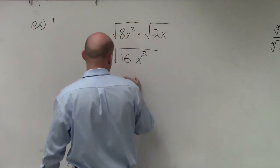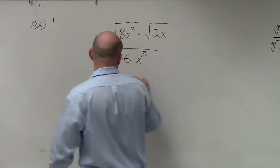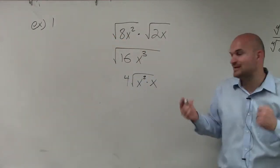we know the square root of 16 is just going to be 4. And remember, the square root of x squared, we can break that down into x squared times x. Well, I know the square root of x squared - that's just going to be x.